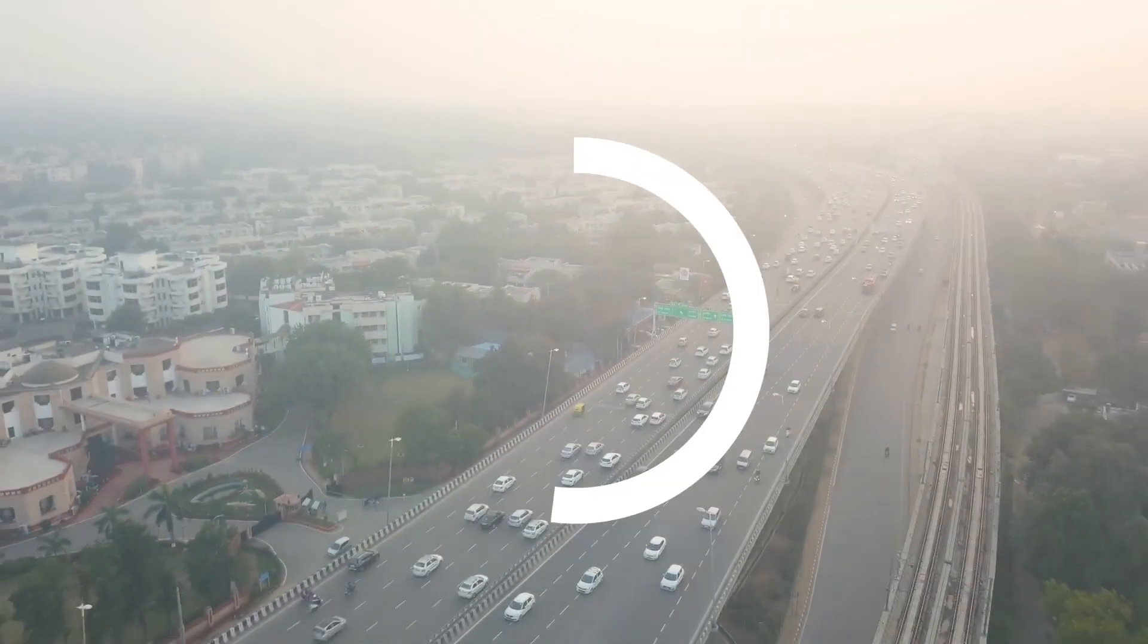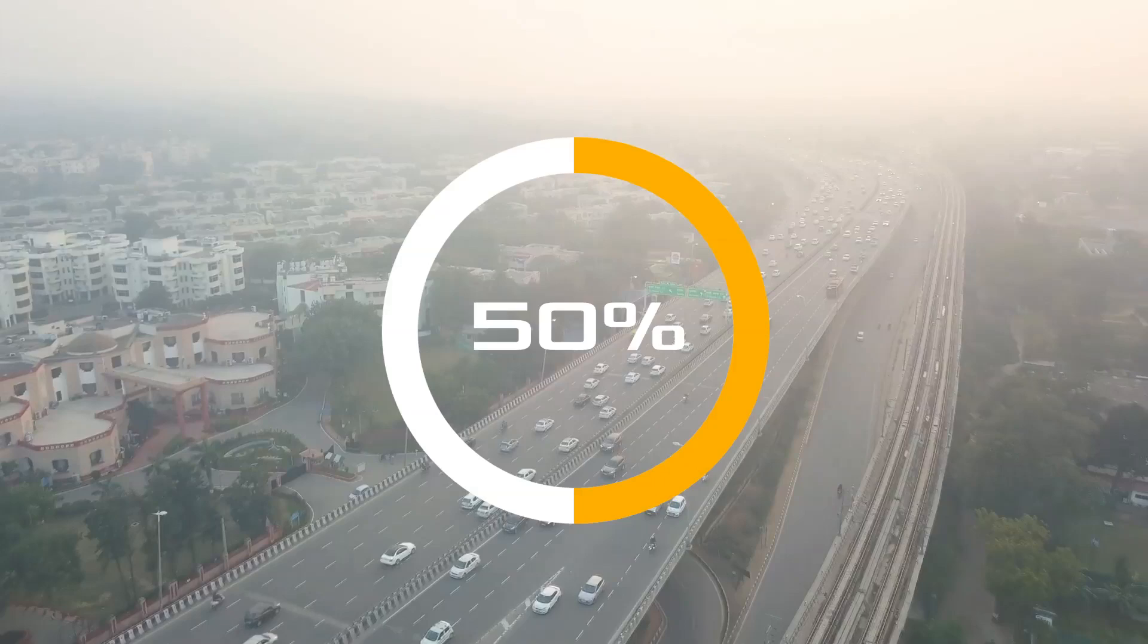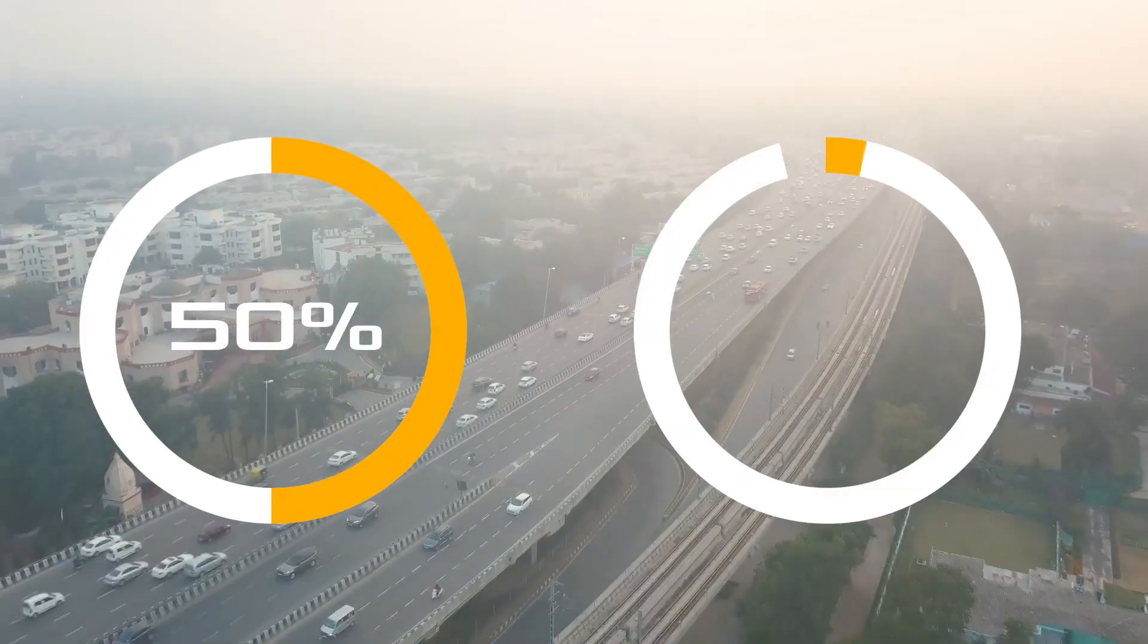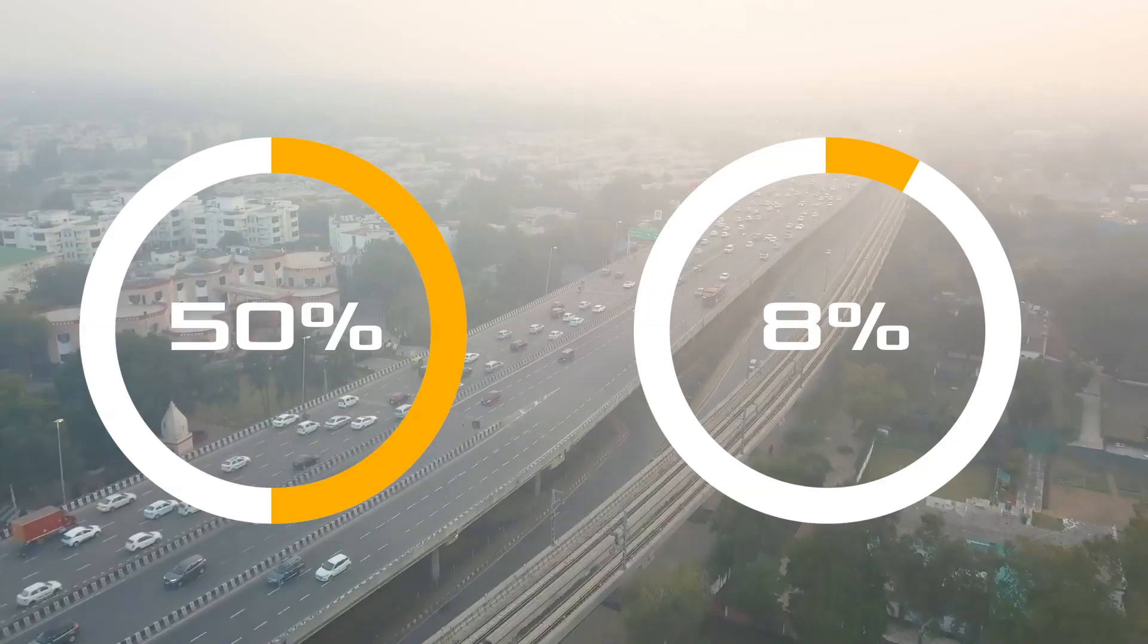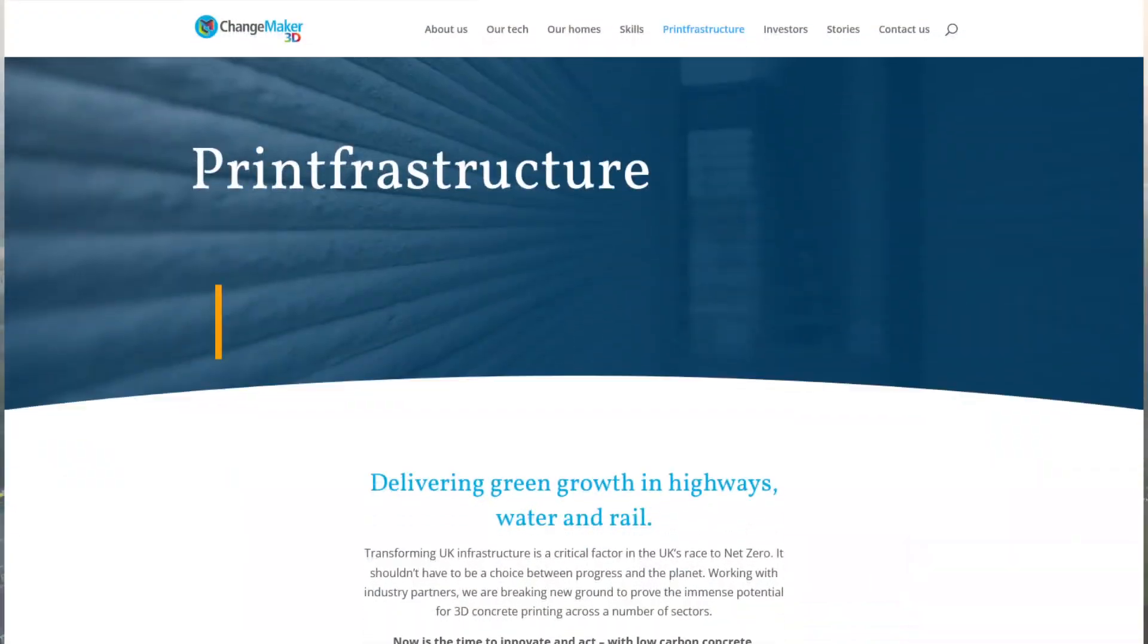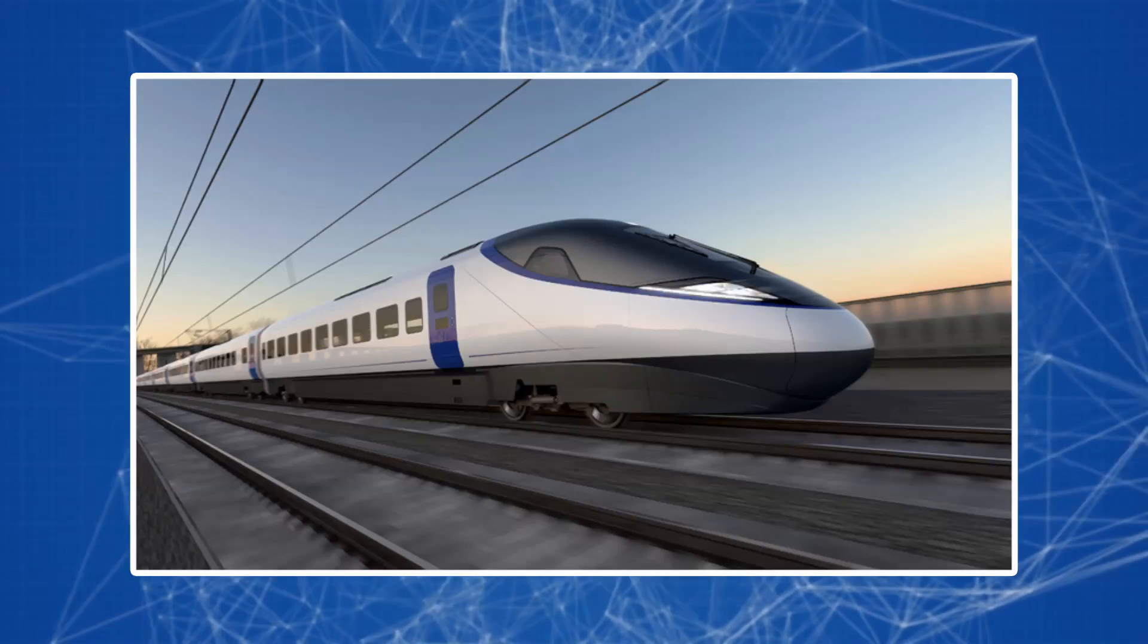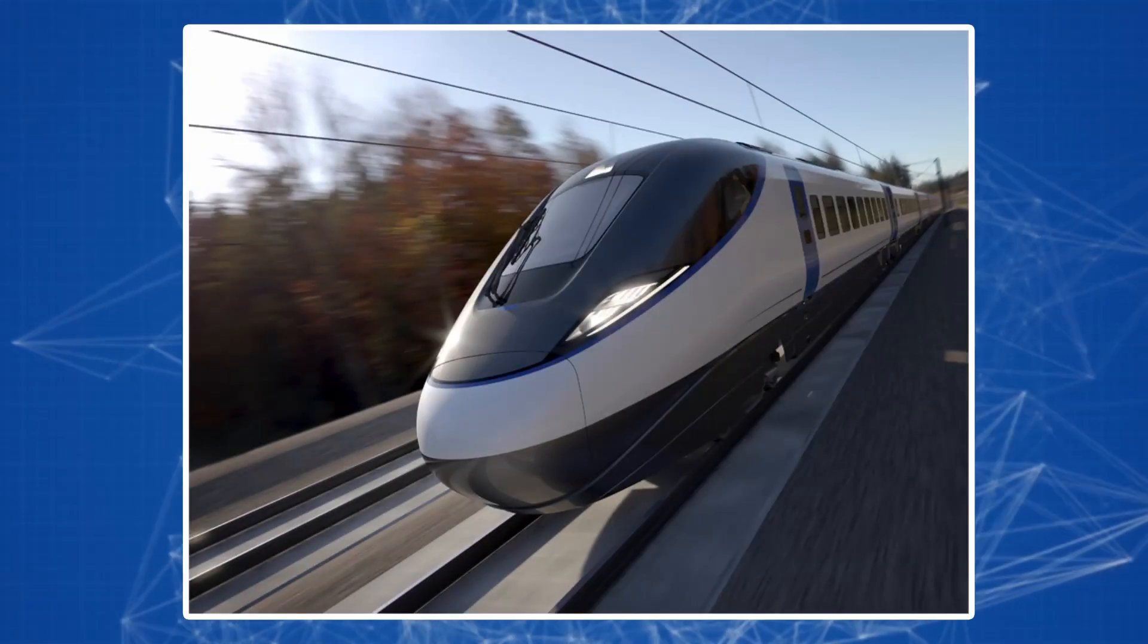Another major benefit will be a 50% reduction in carbon dioxide production. After all, conventional concrete production accounts for 8% of all greenhouse gases. Trials are planned to begin in 2022. The company will be engaged in the construction of infrastructure in the country's railway sector.